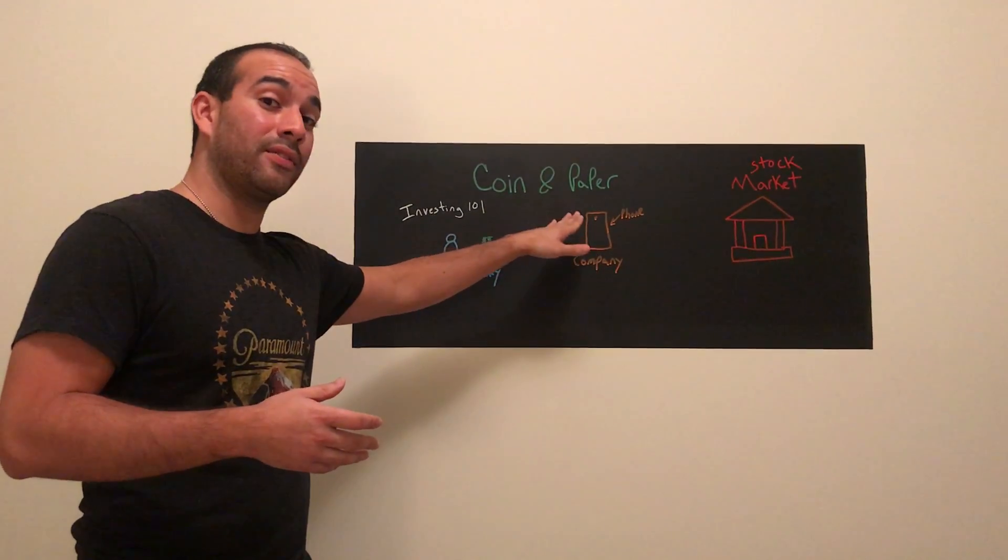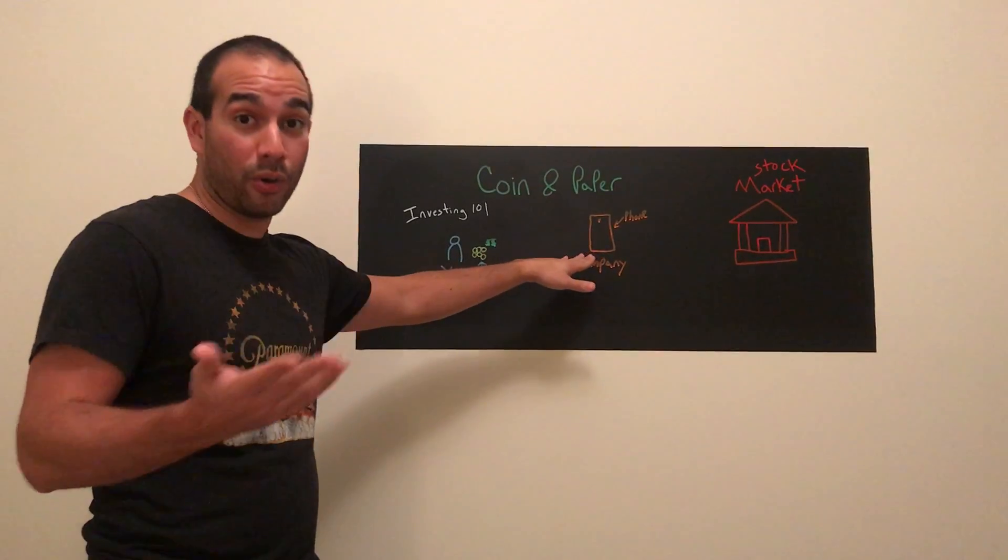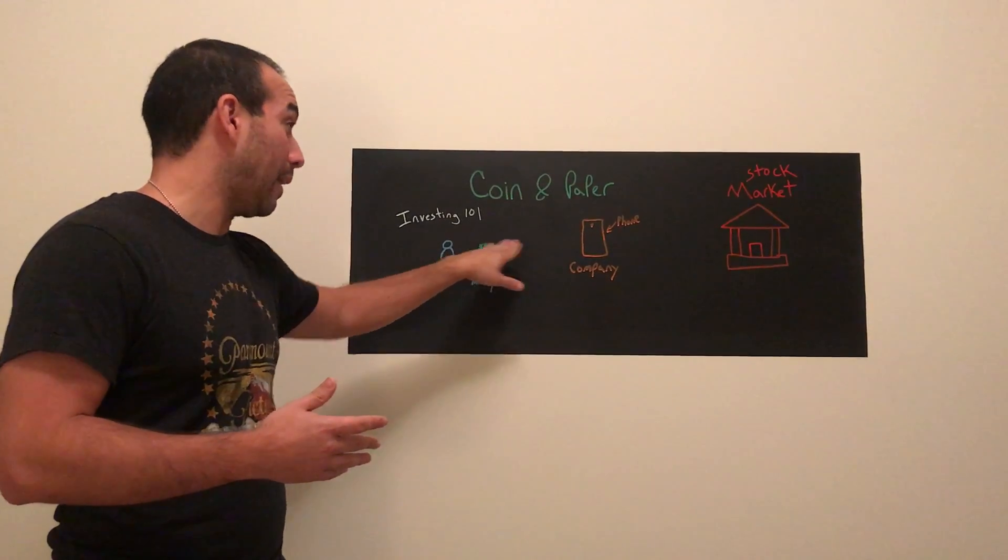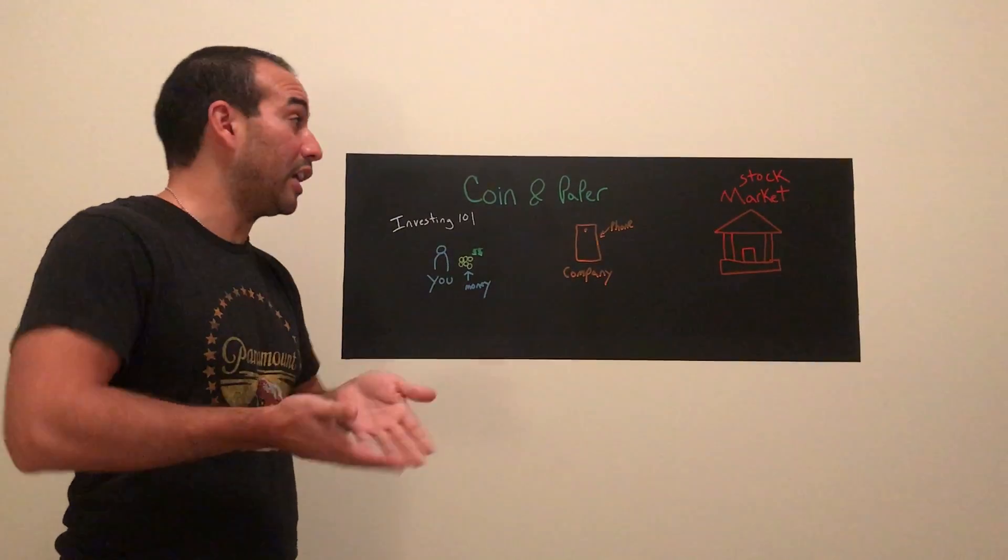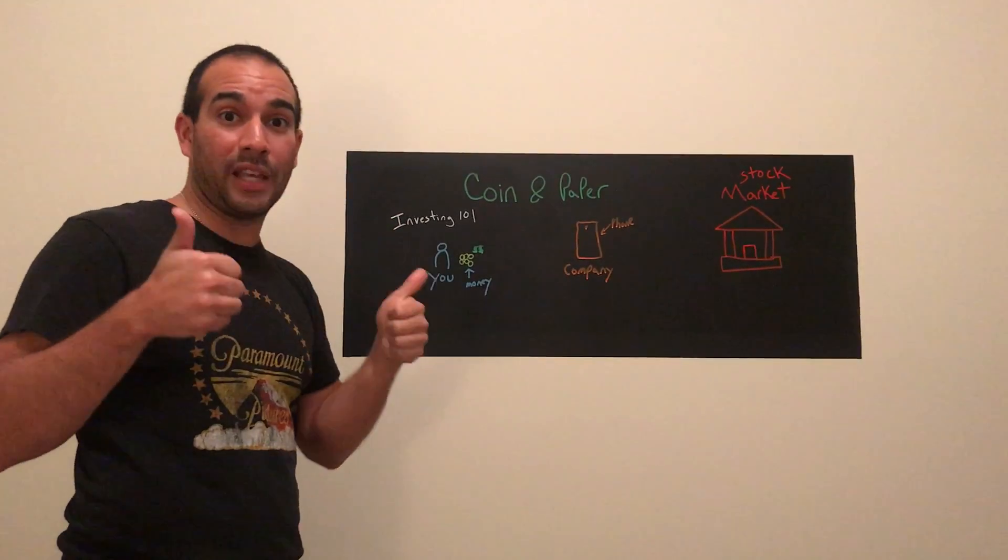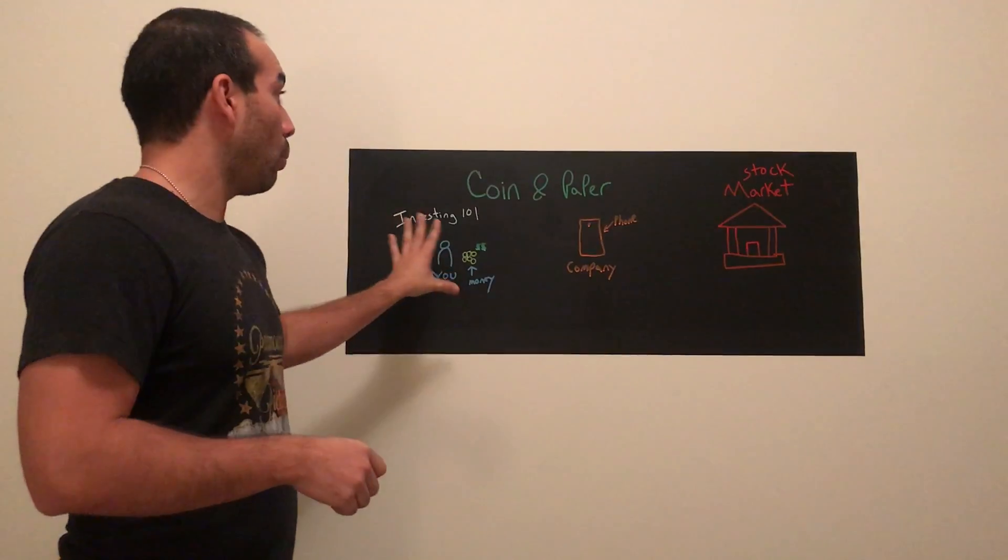Now what's happening is, when the company makes a lot of money by selling phones, you get a piece of that because you're a part owner. So your shares increase in value, and that's a good thing.